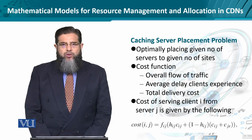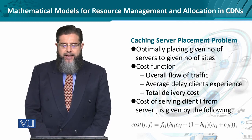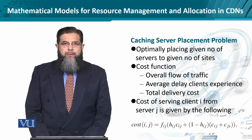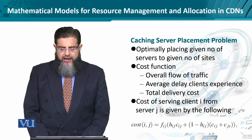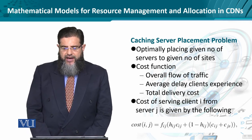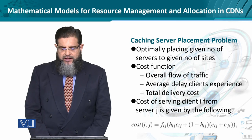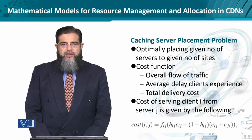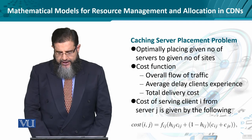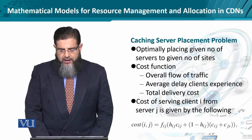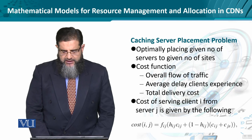This can be mathematically described by a very simple expression. The cost of serving client i from server j can be determined in terms of variables f, h, and c. We need to go back into the notation table to see if these expressions make sense.